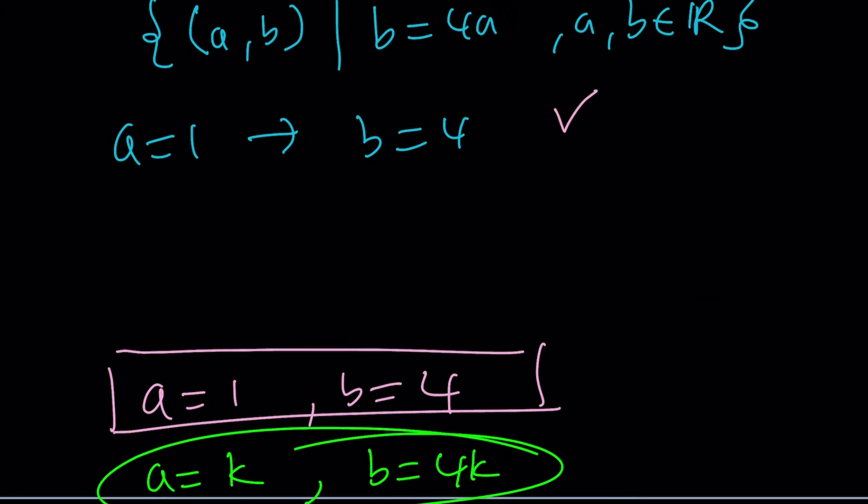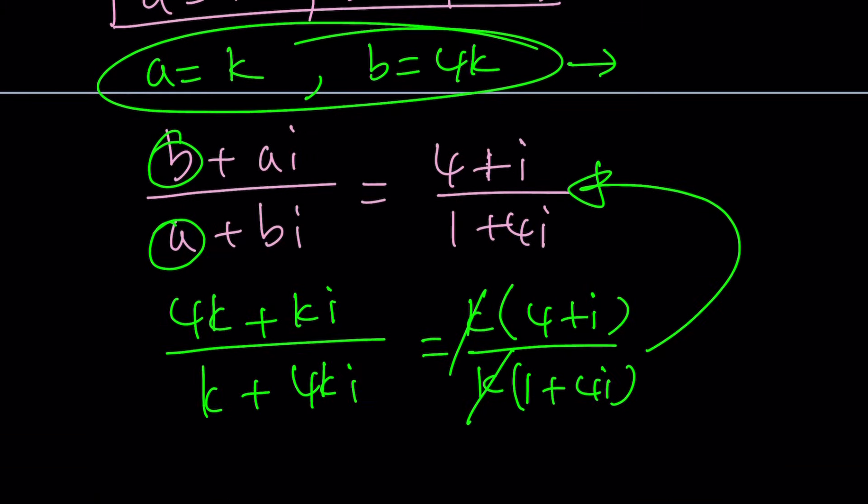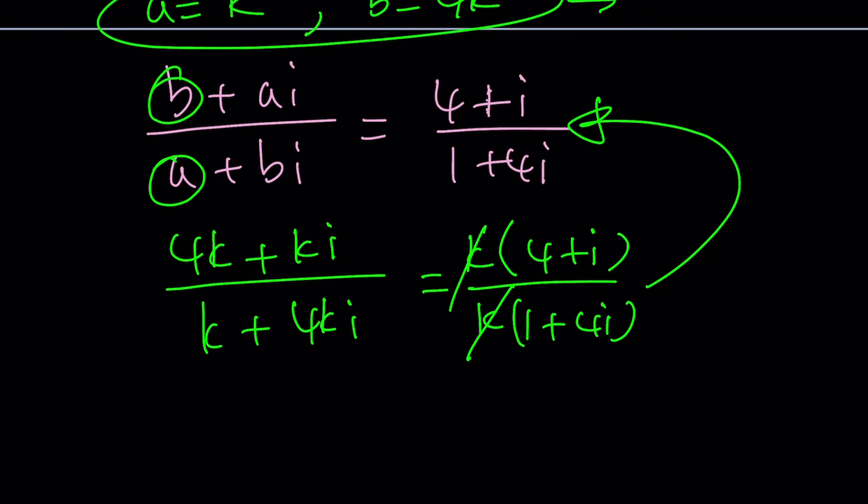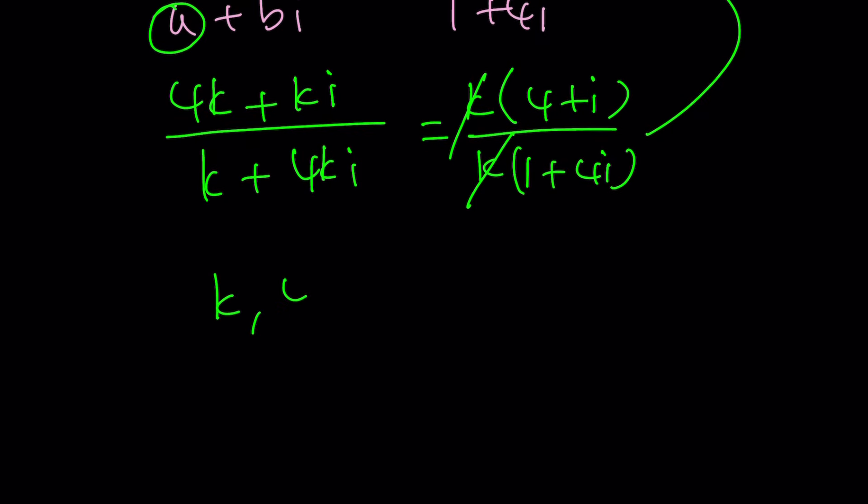And this is another way to express our solutions. Instead of writing B equals 4A, you can also parameterize the solutions and you can say, hey, our solutions are going to be like K comma 4K, where K is a real number. It's actually a more compact way of writing it. That's why we use parameters instead of repeating the same variable, right?